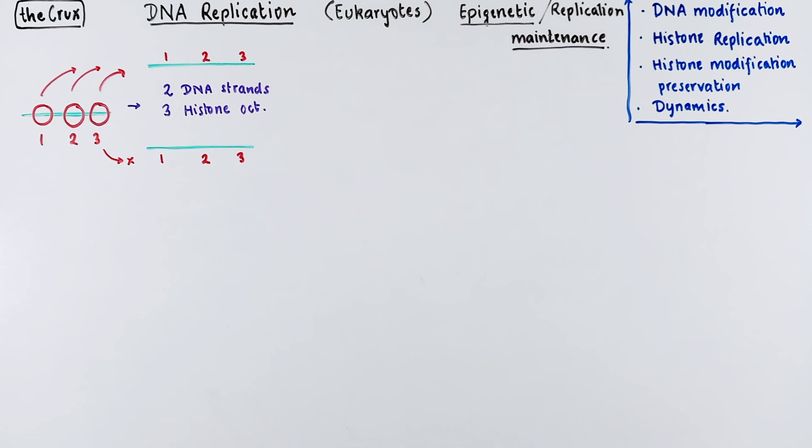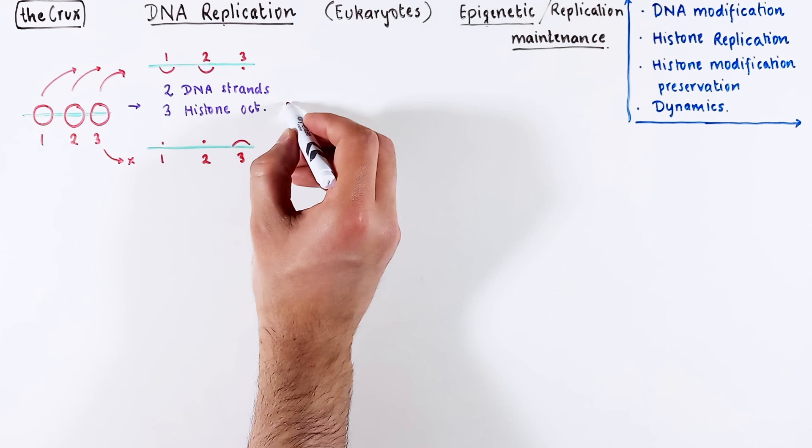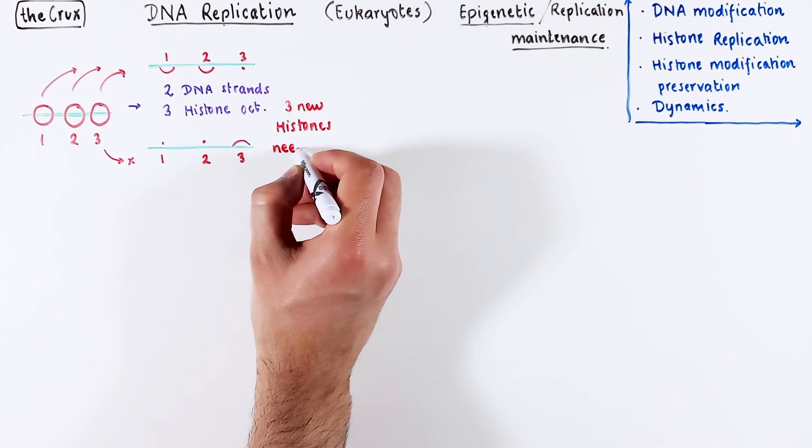For simplicity, let's just assume that two histones go here and the third one goes here. Now you still have these three empty locations that do not have any histones. So during replication of the DNA, three new histones are needed, at least in this particular example.